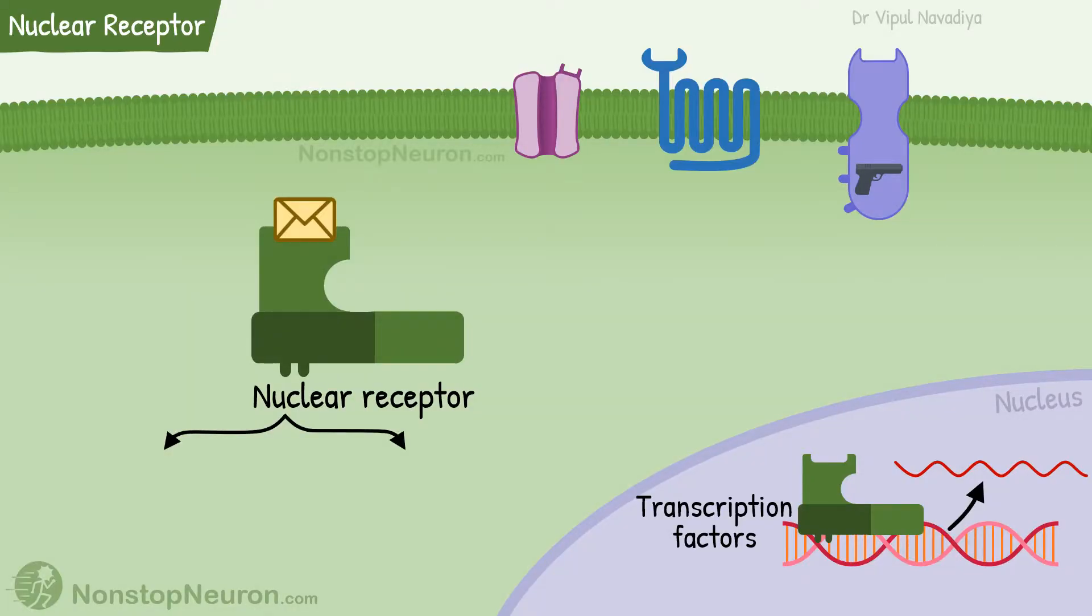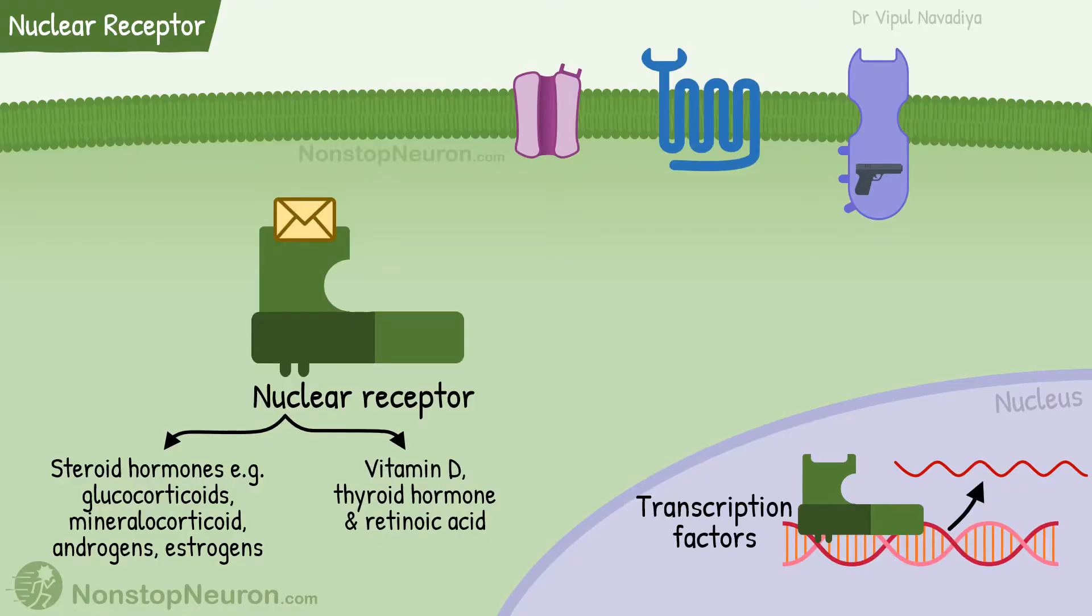There are two main sub-families of these receptors. One family contains receptors for steroid hormones, for example glucocorticoids, mineralocorticoids, androgens, estrogens, etc. The other family consists of receptors for vitamin D, thyroid hormones, and retinoic acid. Apart from these, other nuclear receptors recognize a wide range of xenobiotics and metabolites.